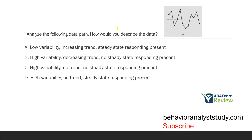Then ask yourself, what is the variability like? Is the data very variable? When we look at variability, you're looking at the separation from the data points into that average. Here, we have quite a bit of separation from our top data point to our bottom, and it happens quite frequently. The data is all over the place — extremely variable. So we have no trend and high variability. Answer A says low variability, increasing trend, steady state responding present — we know it's not low variability. The trend isn't increasing, and we're not in a steady state, because a steady state implies essentially no variability.